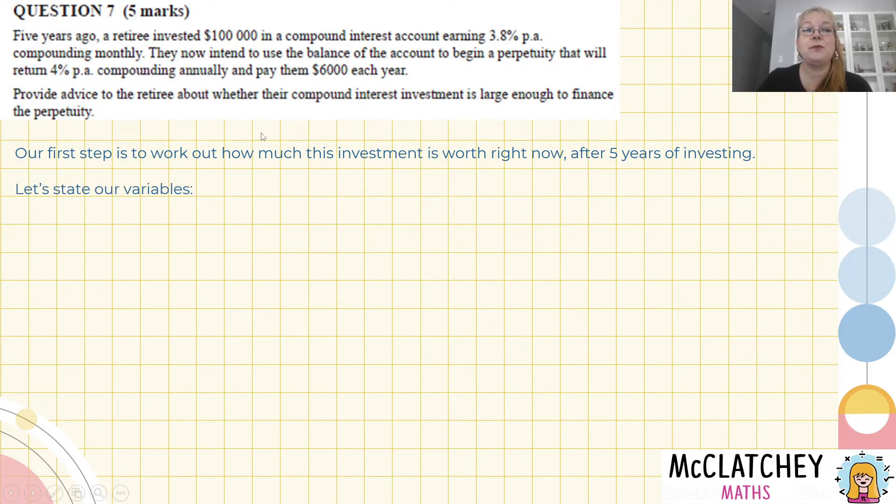So let's state our variables to begin with. We've got the principle that we put in. The beginning amount was $100,000. Our interest rate is compounded monthly. So we need to divide that by 12 and that will give us 0.00316 and 6 has a little dot on top, which means it's repeated into infinity. The next part is our value for N. N is five years at 12 months of compounding per period. So that makes 60 periods altogether.